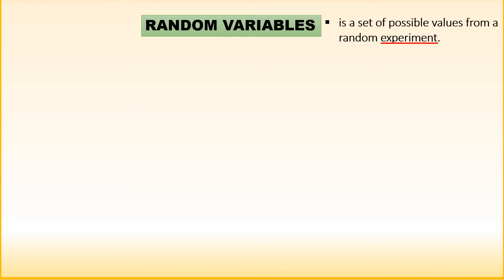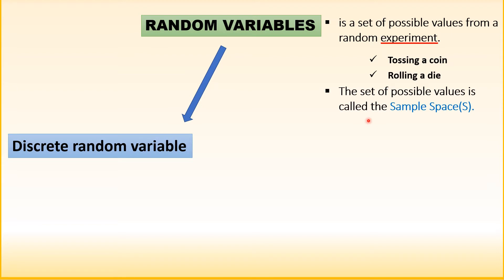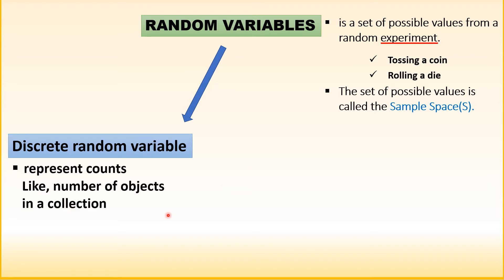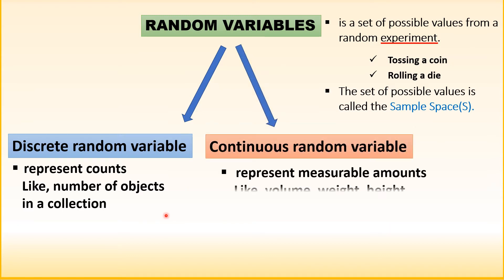Let us review first random variables. A random variable is a set of possible values from a random experiment, like tossing a coin and rolling a die. The set of possible values is called the sample space, or S. We have two types: discrete random variables, which represent counts like number of objects in a collection, and continuous random variables, which represent measurable amounts like volume, weight, and height.